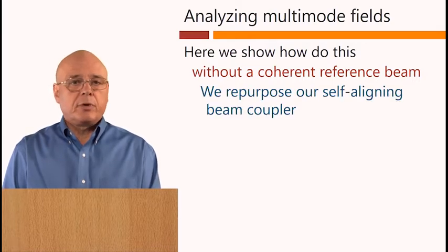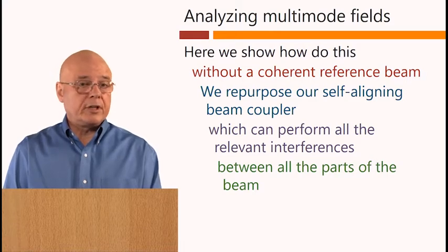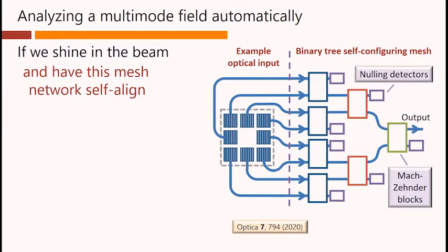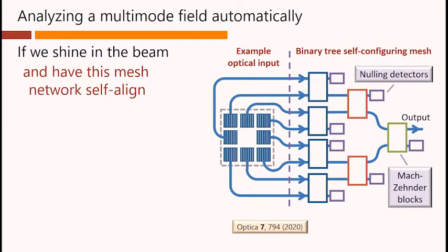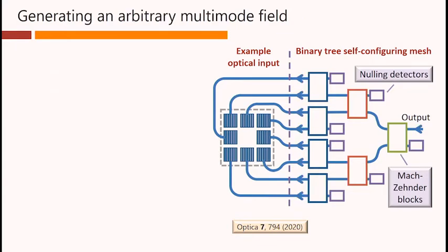Here we show how we can do this without a coherent reference beam. And to do this, we repurpose our self-aligning beam coupler, which can perform all of the relevant interferences between all of the parts of the beam. If we shine in the beam into this example optical input set of grating couplers here, and have this mesh network self-aligned, so all the power appears at the output, then from the settings of the phase shifters in the mesh, we can simply deduce all of the relative amplitudes and phases of the inputs.